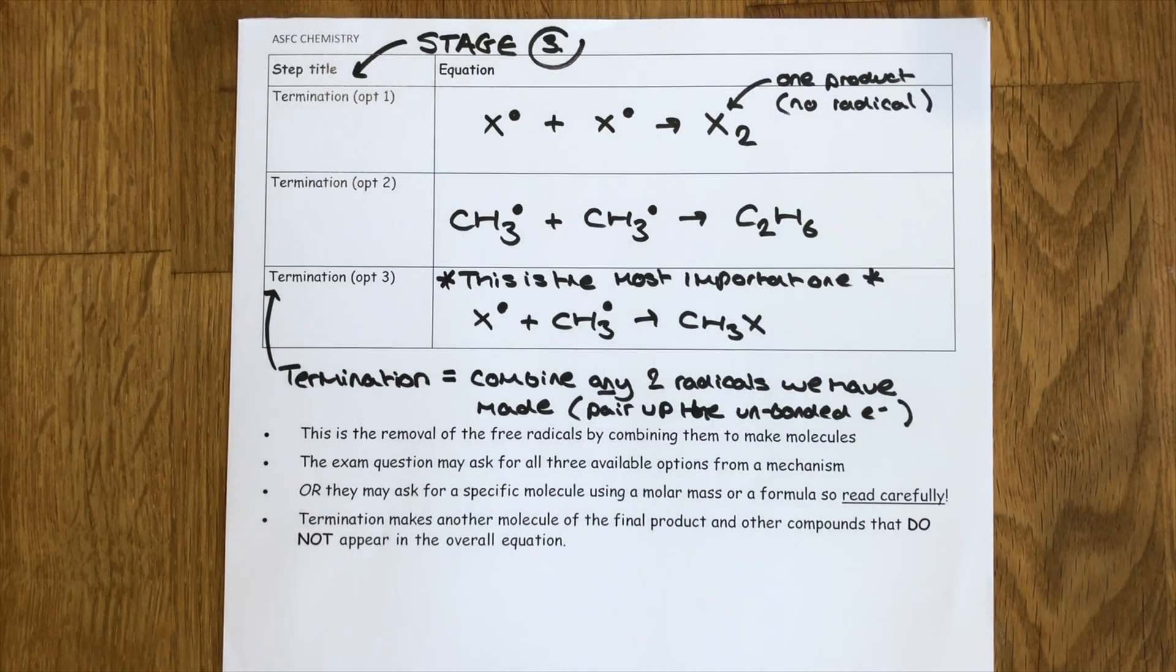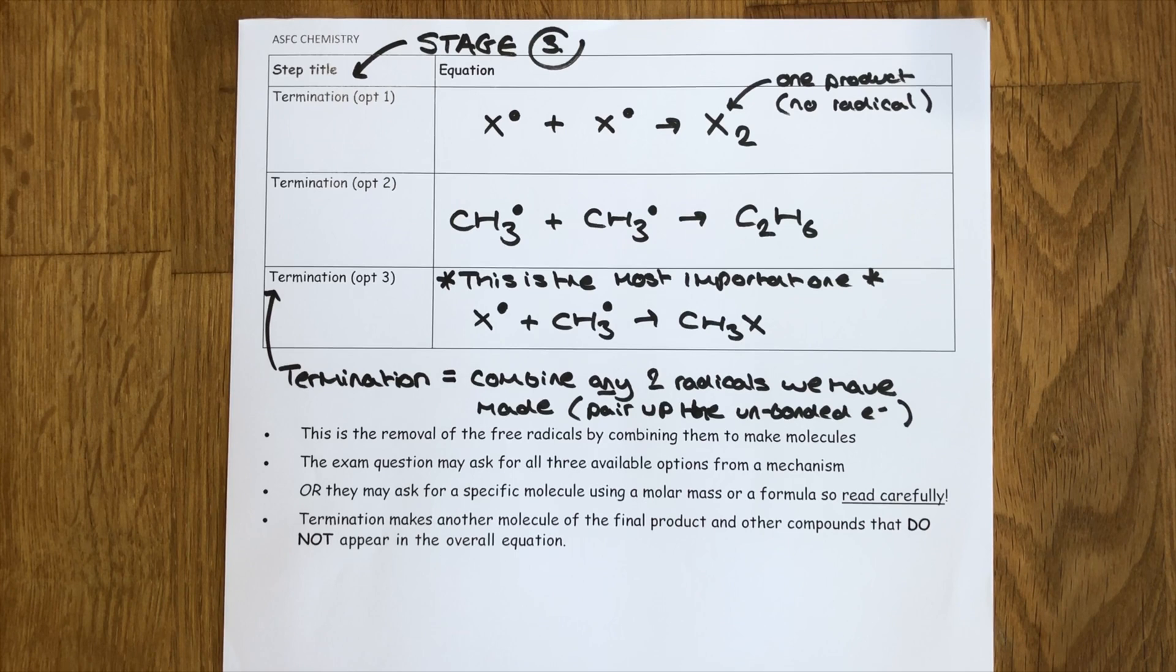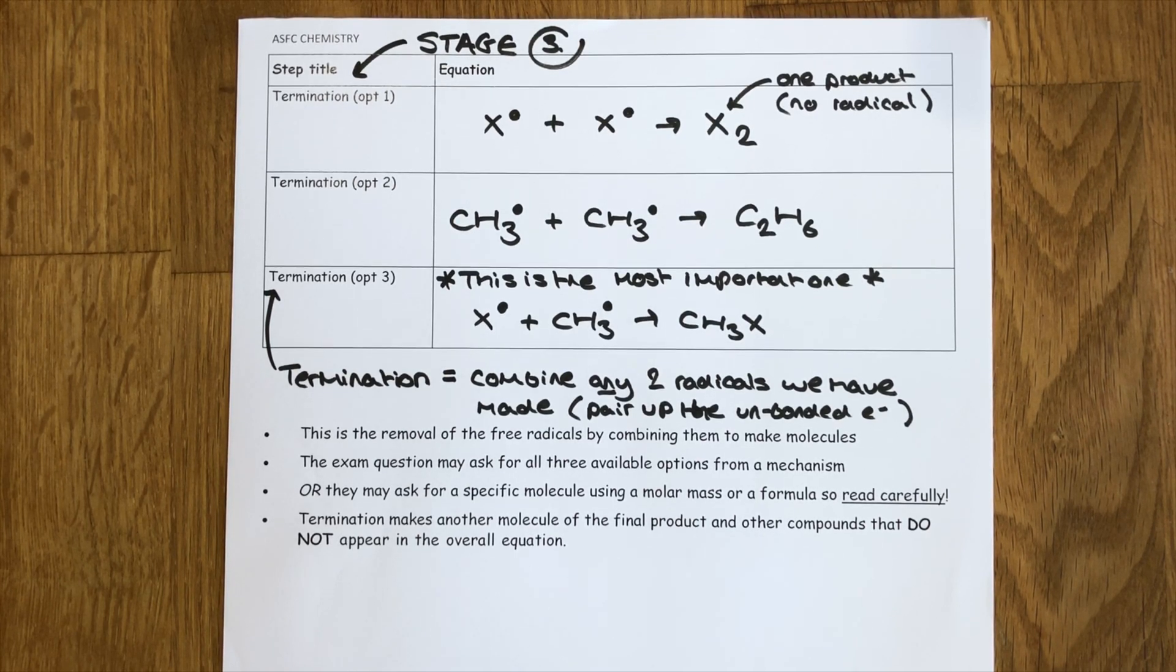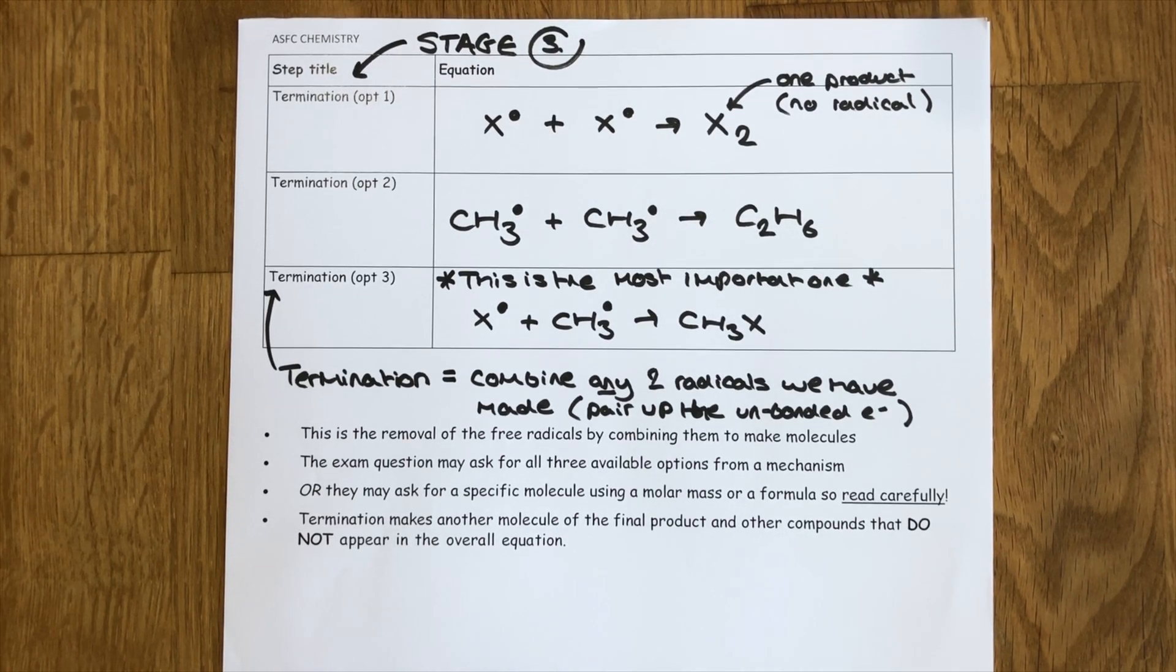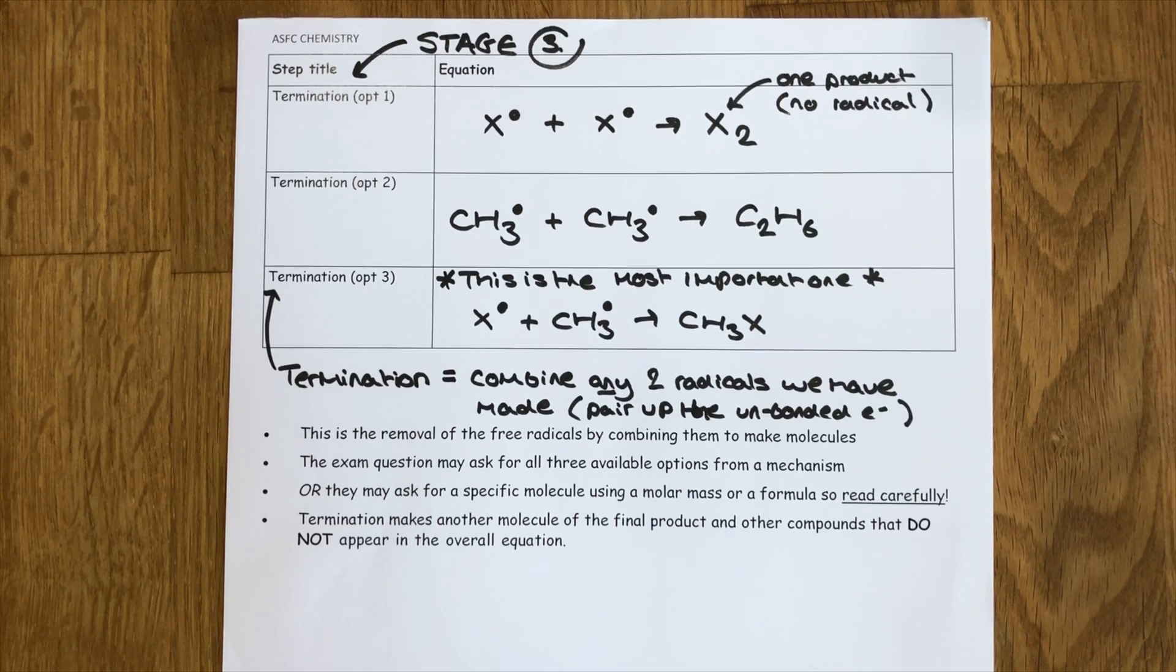The final stage of my radical substitution mechanism, this final stage termination has three separate equations with one of them taking a massive level of priority over the other two. What happens in termination is we effectively shut down the process. In propagation, the whole thing could keep going round and round because the radical was constantly going back in. It was getting reformed and used and reformed and used. Termination shuts the process down.